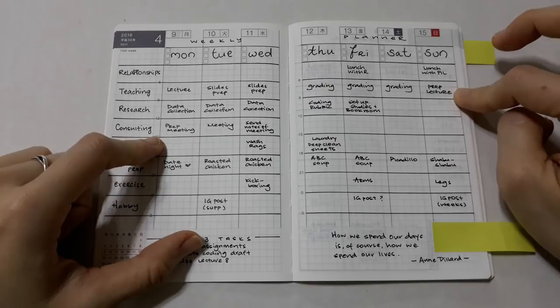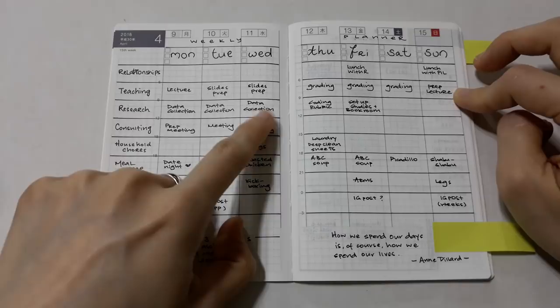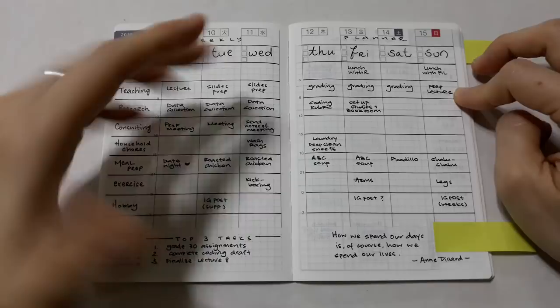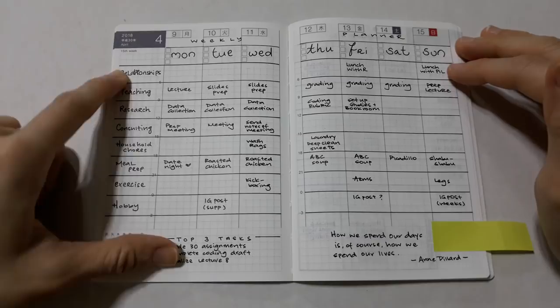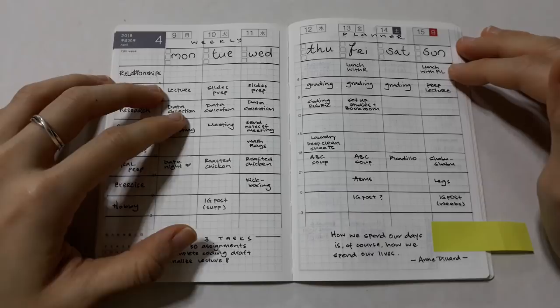Planning my week this way is useful for two reasons. First, it ensures that I carve out time for domains outside of my work, such as relationships and self-care. Secondly, it allows me to develop a more realistic plan for the day, since I can see at a glance what my commitments are for each day.